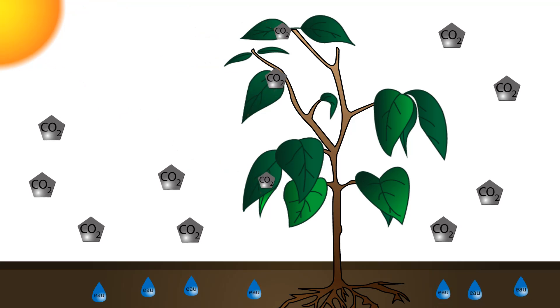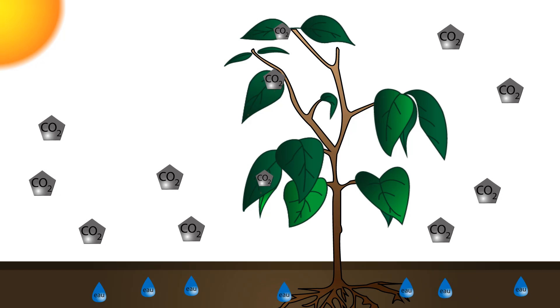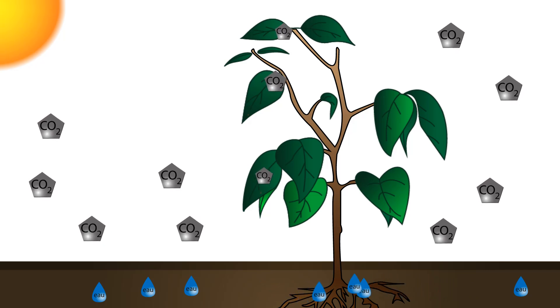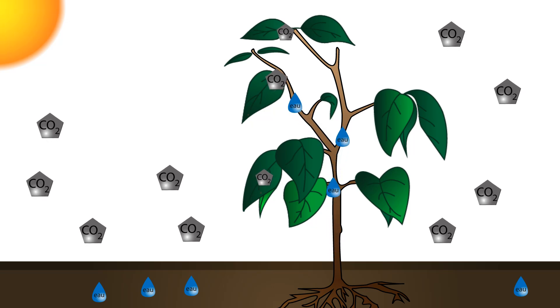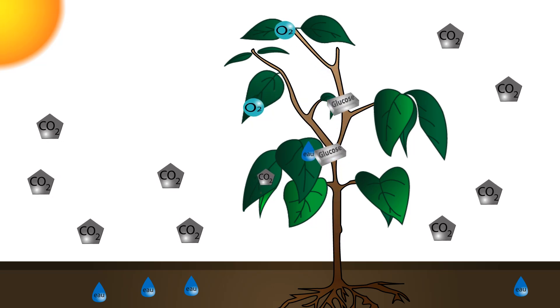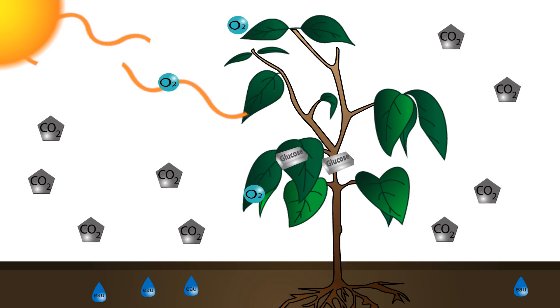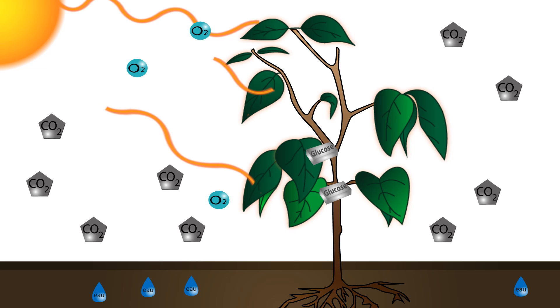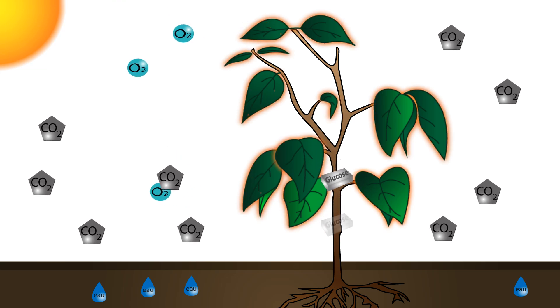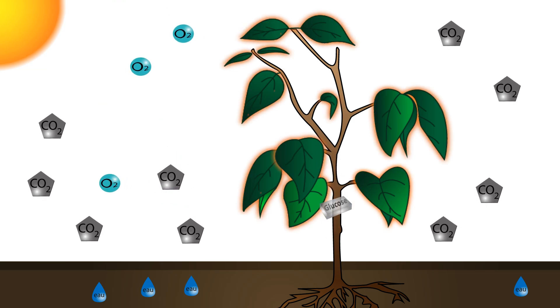It is the photosynthesis. It is another chemical reaction that uses water pumped by the roots and the CO2 captured by the leaves and changes it into glucose used by the organism and oxygen rejected in the atmosphere. This chemical reaction needs energy to come about and this energy is drawn from the light captured by the leaves.